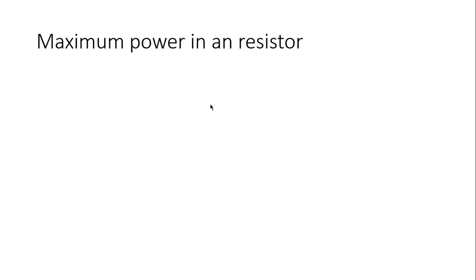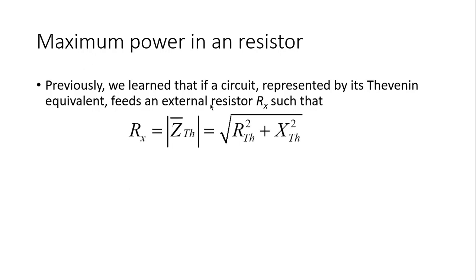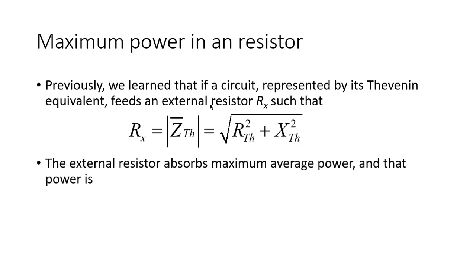Now we go to another problem. We remember that if a circuit is represented by a Thevenin equivalent and it is feeding an external resistor R_X, and the value of that external resistor is the absolute value of the Thevenin impedance, then that resistor absorbs maximum average power.